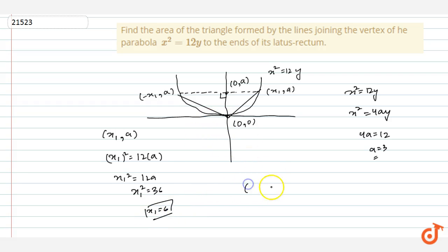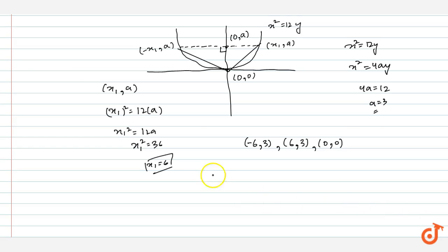The three vertices of the triangle are (-6, 3), (6, 3), and (0, 0). Now we have to find the area of the triangle. We can see that it is a right angle triangle.